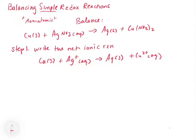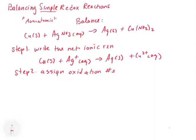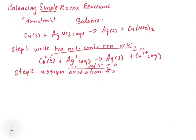Step two is to assign oxidation numbers. For the copper, we're going from copper zero to copper two plus, so we identify this as the species being oxidized, and it's being oxidized by two electrons. The silver is going from silver plus one to silver zero, so this is being reduced by one electron. And therein lies the crux of the issue — one species is being oxidized by two electrons, but the other is only being reduced by one electron, so something is not in balance.